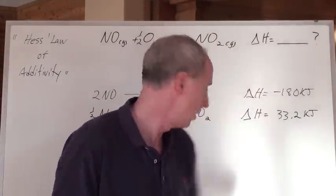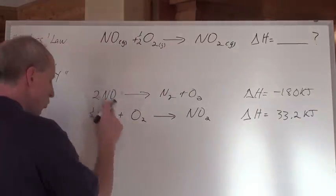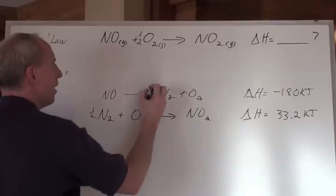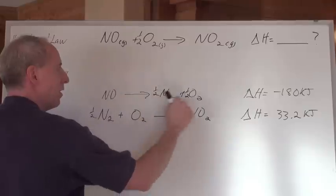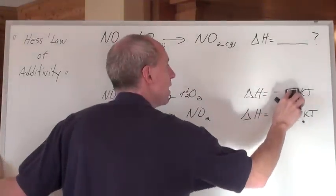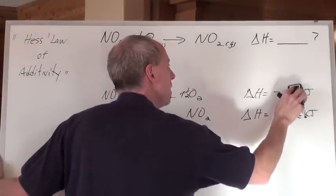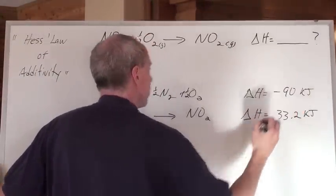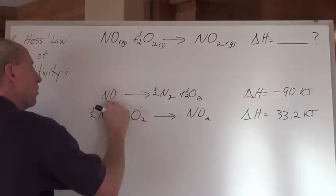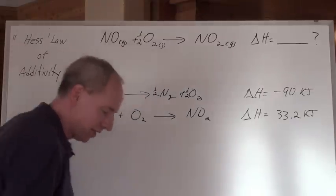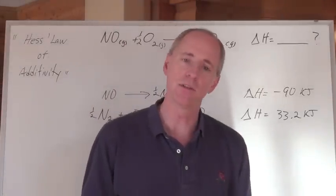So, I've got two NO's here. I don't want two here. I just want one. So, if I want one there, I better put a half here and a half here, because I'm dividing everything in this equation by two. What do I got to do to that heat? I've got to divide it by two. So, negative 180 becomes negative 90. Is that chemical now, right here, in the proper amount on the proper side? You betcha. I've adjusted that one absolutely perfectly.